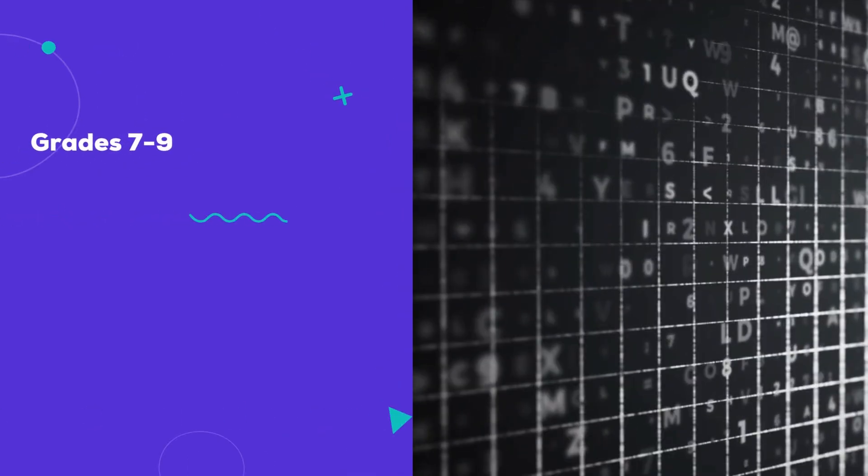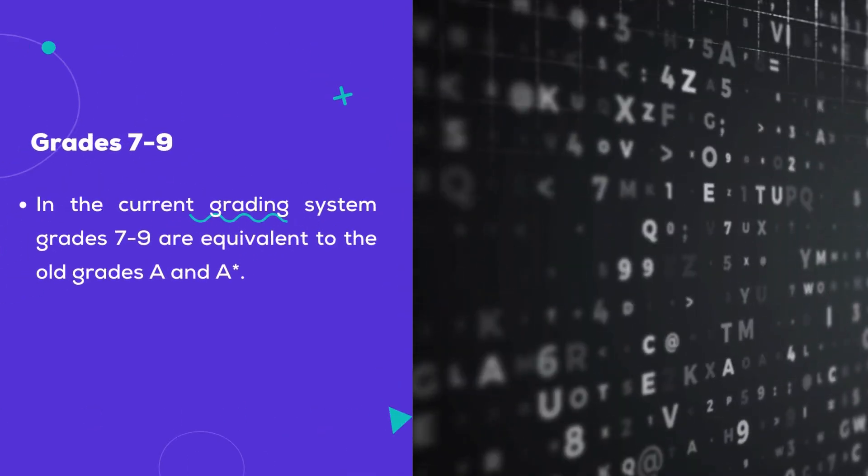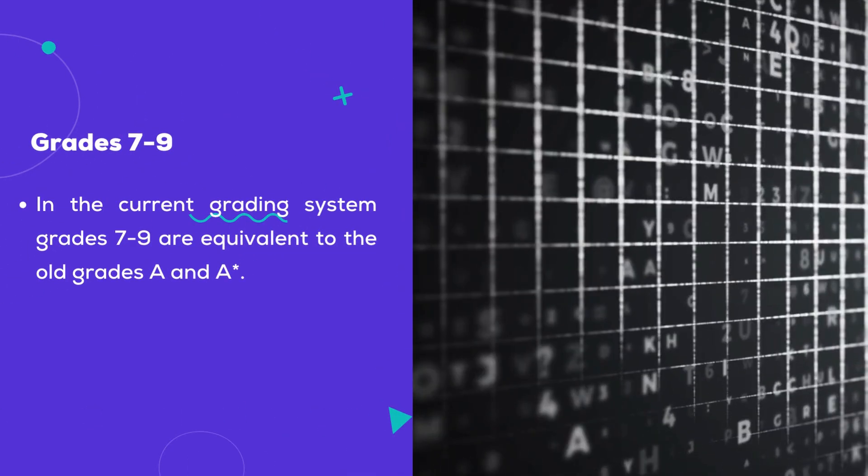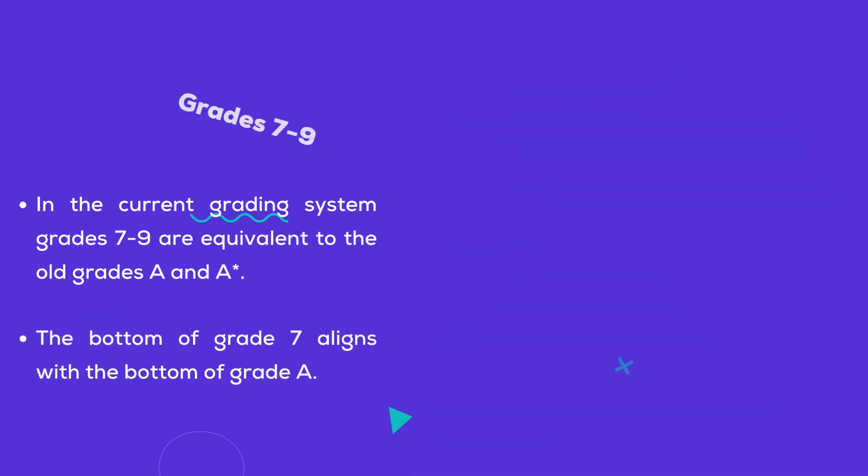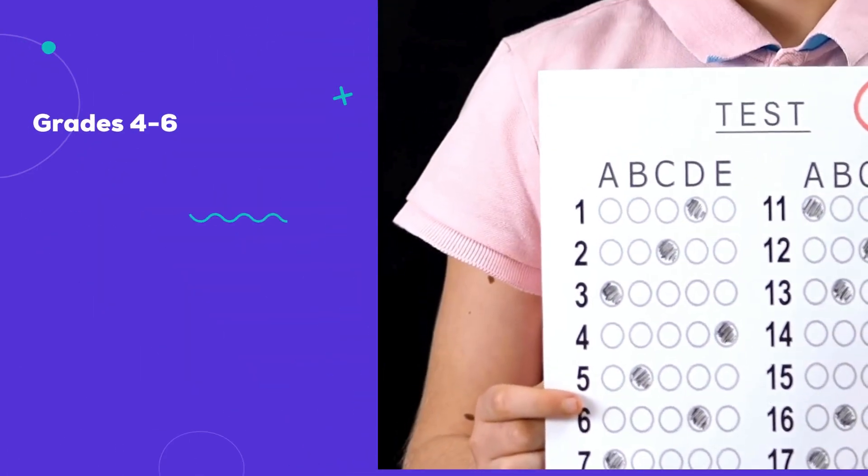Grades 7 to 9: In the current grading system, grades 7 to 9 are equivalent to the old grades A and A*. The bottom of grade 7 aligns with the bottom of grade A.